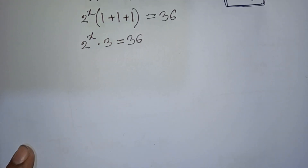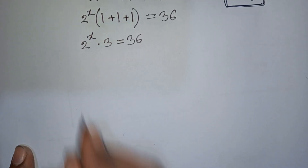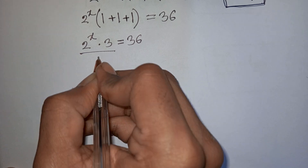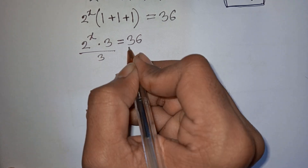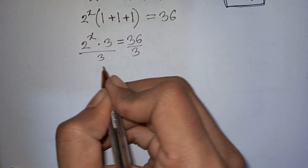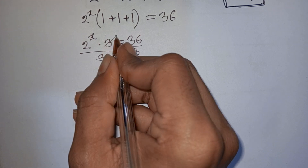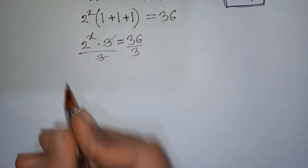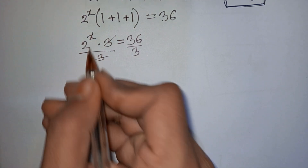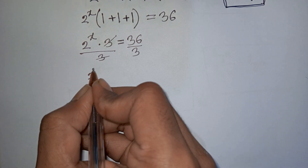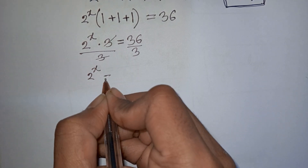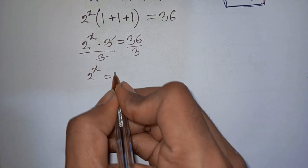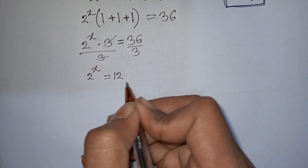Now we divide by 3 on both sides. The 3s cancel, so 2 power x is equal to 36 divided by 3, that means it will be 12.